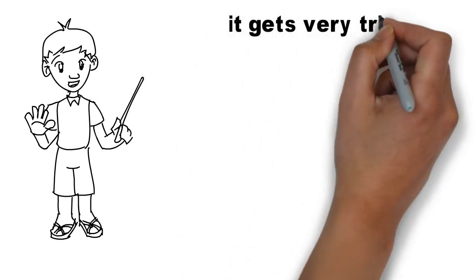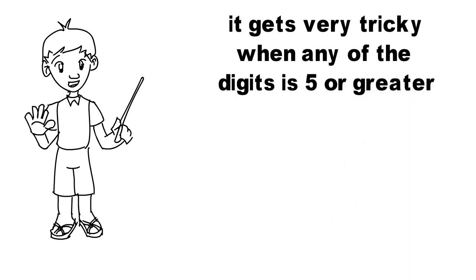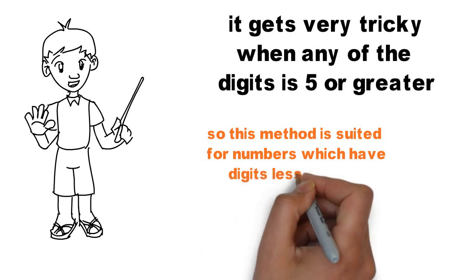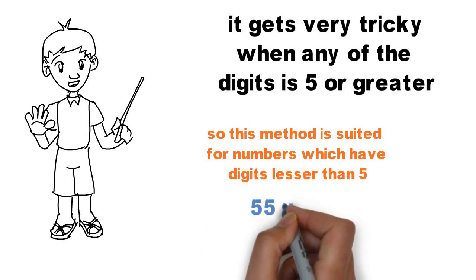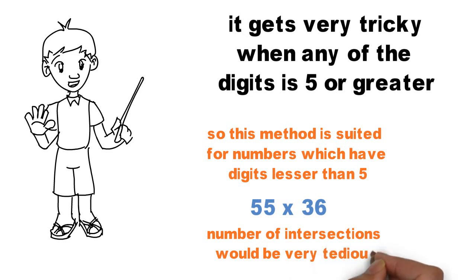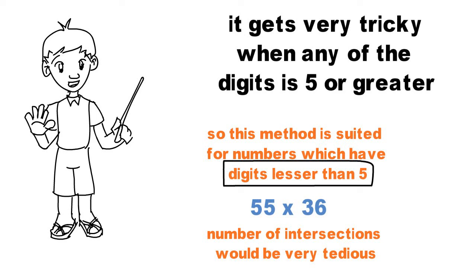It gets very tricky when one of the digits is 5 or greater. So this method is suited for numbers which have digits lesser than 5. For example, 55 times 36. Number of intersections would be very tedious in this case. So this method is best when you work with digits lesser than 5.